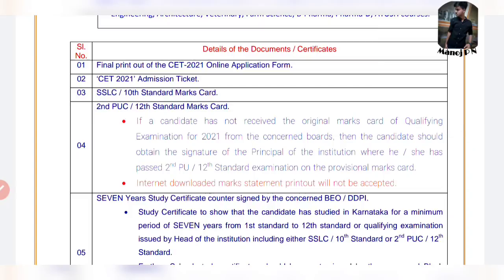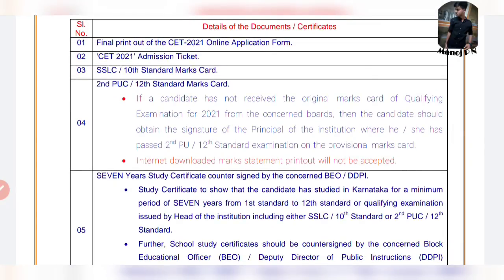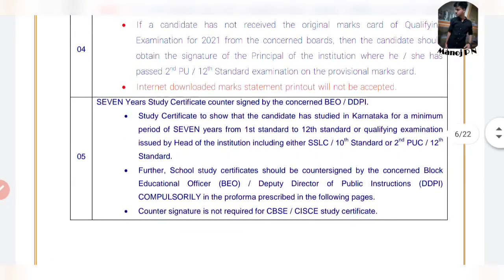Final printout of CET 2021 application and CET admission ticket. You will get the 10th and 12th mark card — the second piece of 12th and 10th mark card. You will get the result — the provisional mark is activated if you put the results in this area. If you put a PDF, you can print out your PDF. You can print out your principal sign and seal — that will be considered as a provisional mark card. If you have a 7-year study certificate, take it.